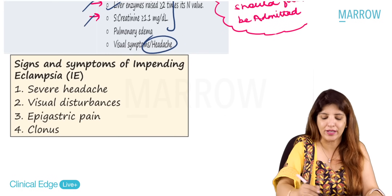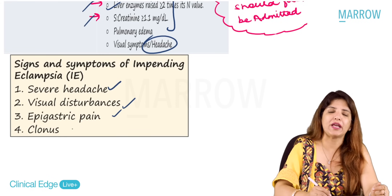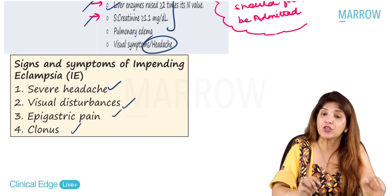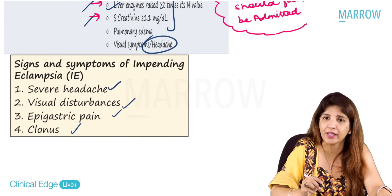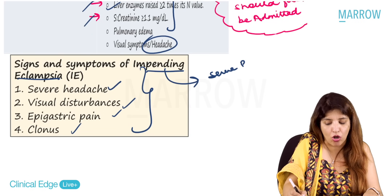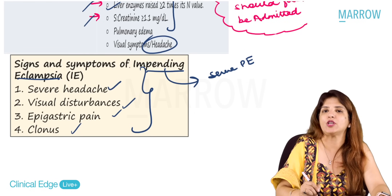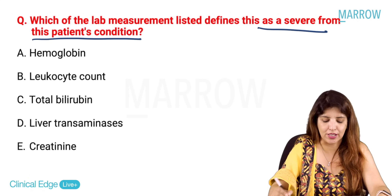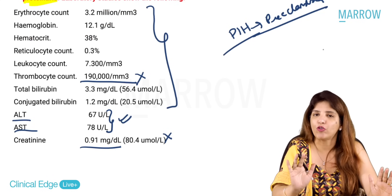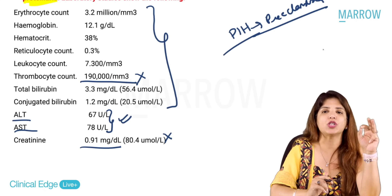Signs of impending eclampsia: severe headache, visual disturbances, epigastric pain, and clonus. Impending eclampsia is a complication only of severe preeclampsia, not mild. So if any of these symptoms are present, you are indirectly dealing with severe preeclampsia. In the MCQ, the answer is liver transaminases. Focus only on serum creatinine, platelet count, and liver enzymes to differentiate mild from severe preeclampsia.